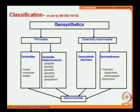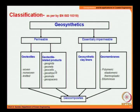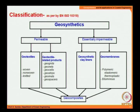Under geotextile-related products, we have six types: geogrids, geonets, geocells, geo-strips, geo-mats, and geo-spaces. Some of them are not widely popular in the field of coastal engineering. These are the general classifications of geosynthetics.